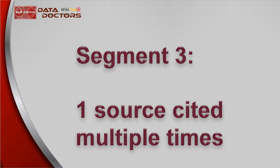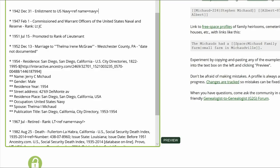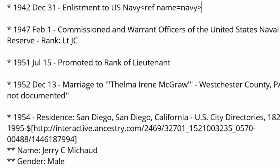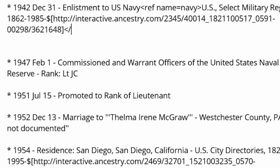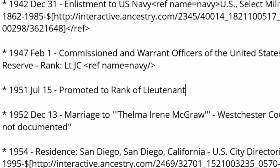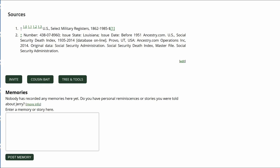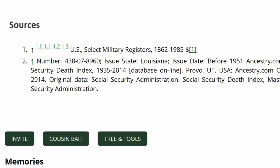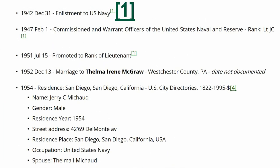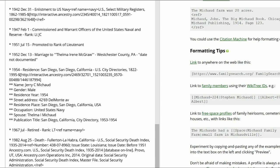Inline citations can be used for one source cited multiple times. This is done by naming the reference — in this case, 'navy'. Add the citation and then the end ref tag. Every time the citation is used, copy the named reference but with a forward slash at the end of the name. The public profile looks like this: the citation is only shown once in the source section, but with superscript numbers identifying each time it is used in the biography.